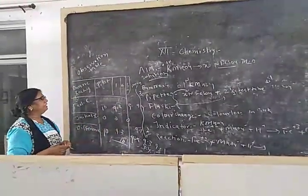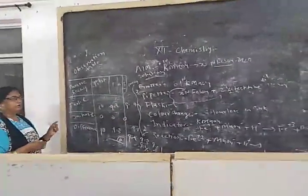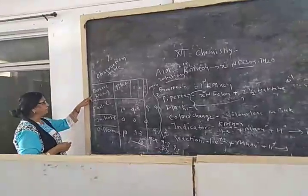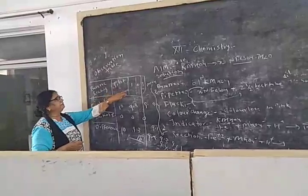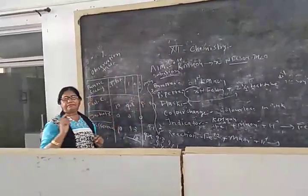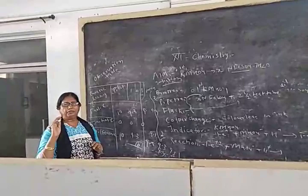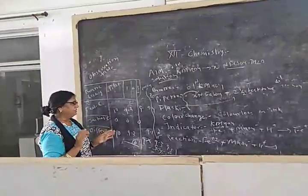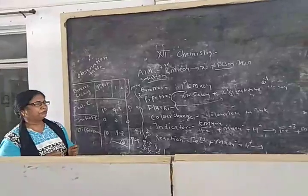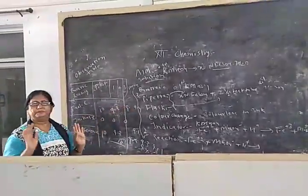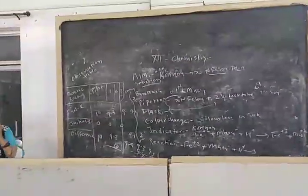So you are having work to make observation table. You will write burette reading, final reading, initial reading, and difference. Burette 1, 2, 3, and mean. In mean, you are not having any initial or final. So please students, you make a good observation table. You will complete the two pages.